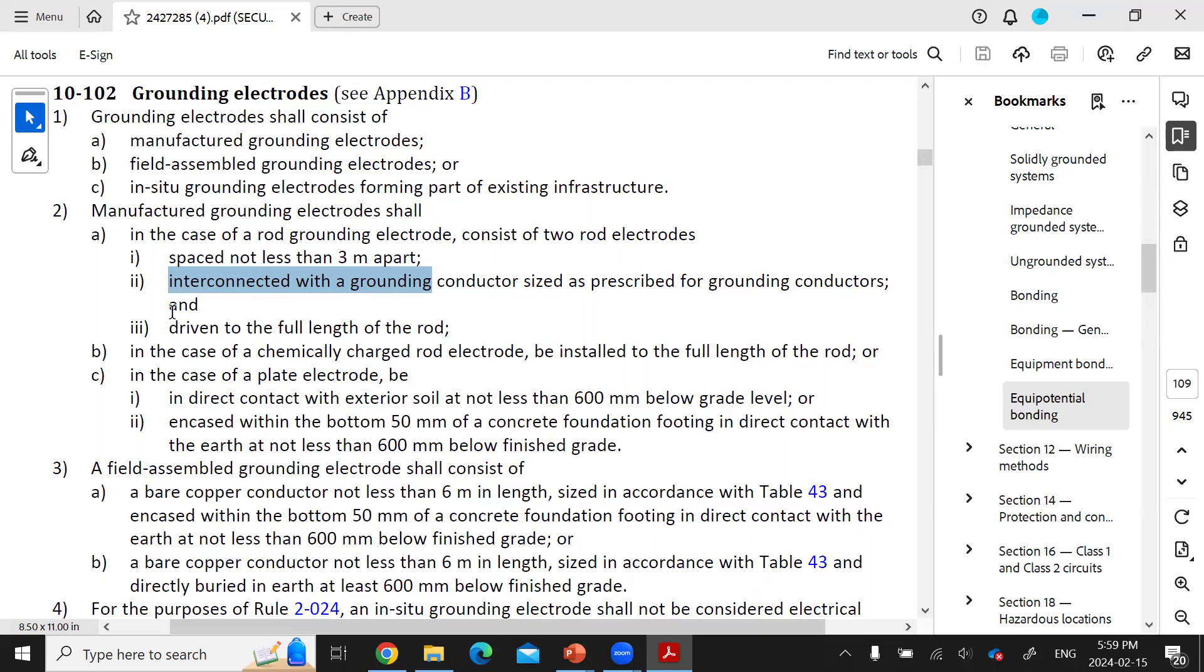Item B says that a chemically charged rod electrode type of manufactured grounding electrode has to be installed to the full length of the rod. Item C says that for plate type electrodes...